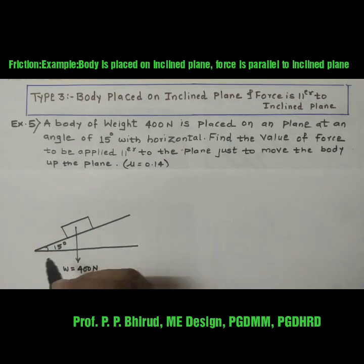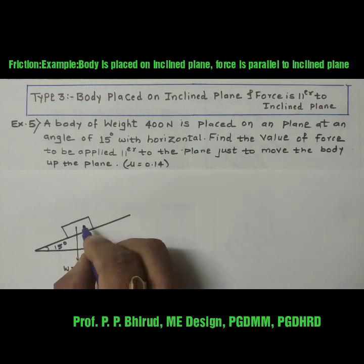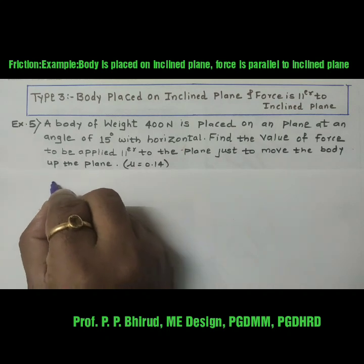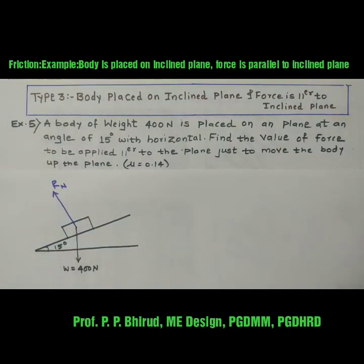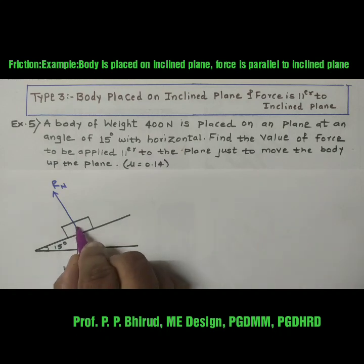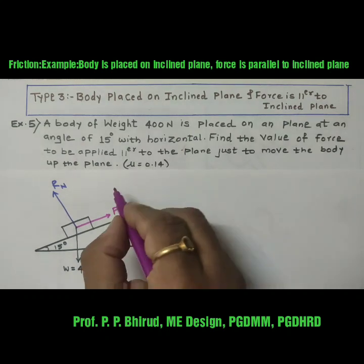Now, this inclined surface will exert a normal force perpendicular to the inclined plane — that is, the normal reaction exerted by the inclined surface on the body. We have to find out the force P which is parallel to the inclined plane and which moves the body in the upward direction.